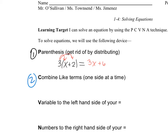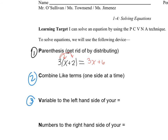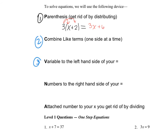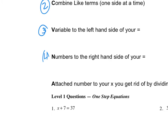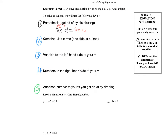Step two: combine your like terms, one side at a time. For instance, x's with x's, numbers with numbers. Part three, variable: get your x's or your y's or your q's — any variable to the left-hand side of your equal. Number four: numbers to the right-hand side. Basically, things that don't have an x or a variable attached to it, you're going to move to the right-hand side of your equal. And last but not least, we have the A. You would think A stands for answer, but no — A stands for get rid of the number attached to your x by dividing.